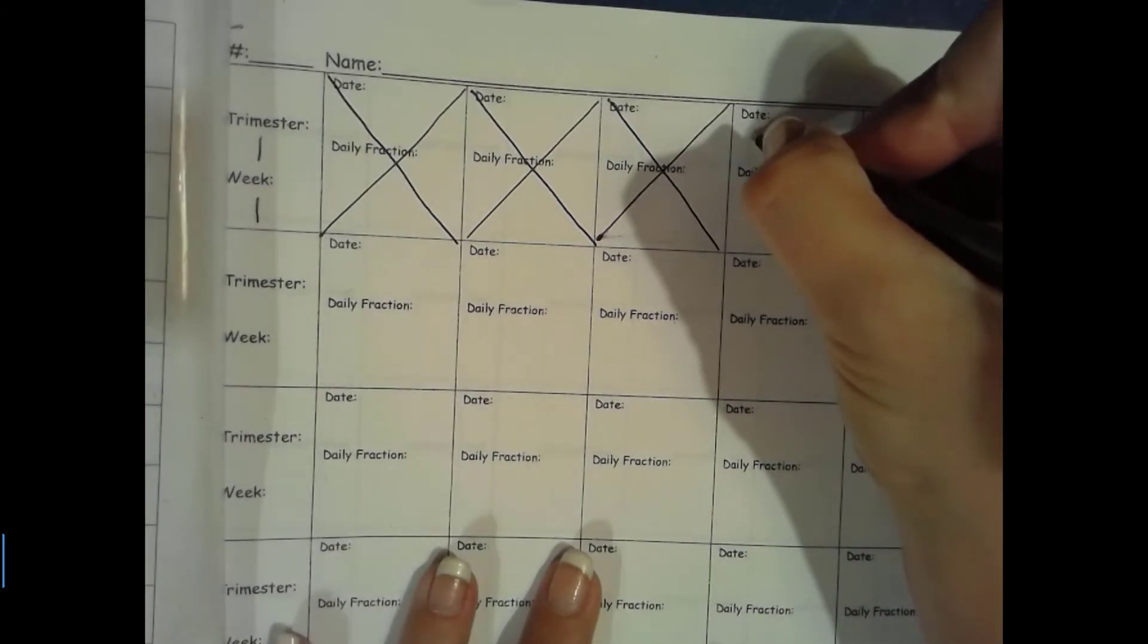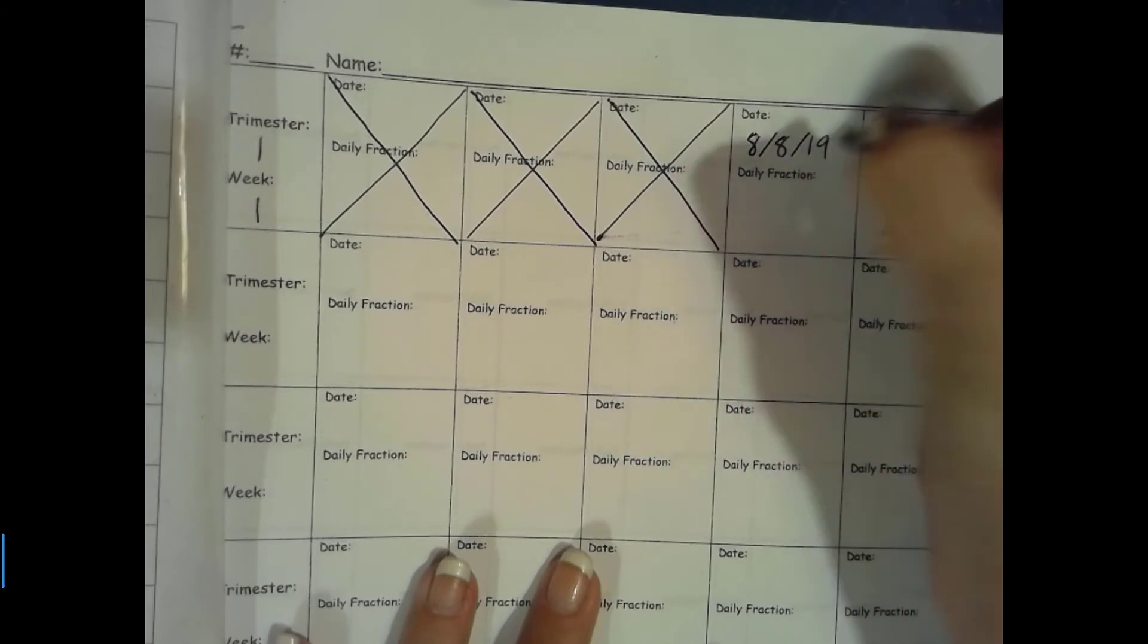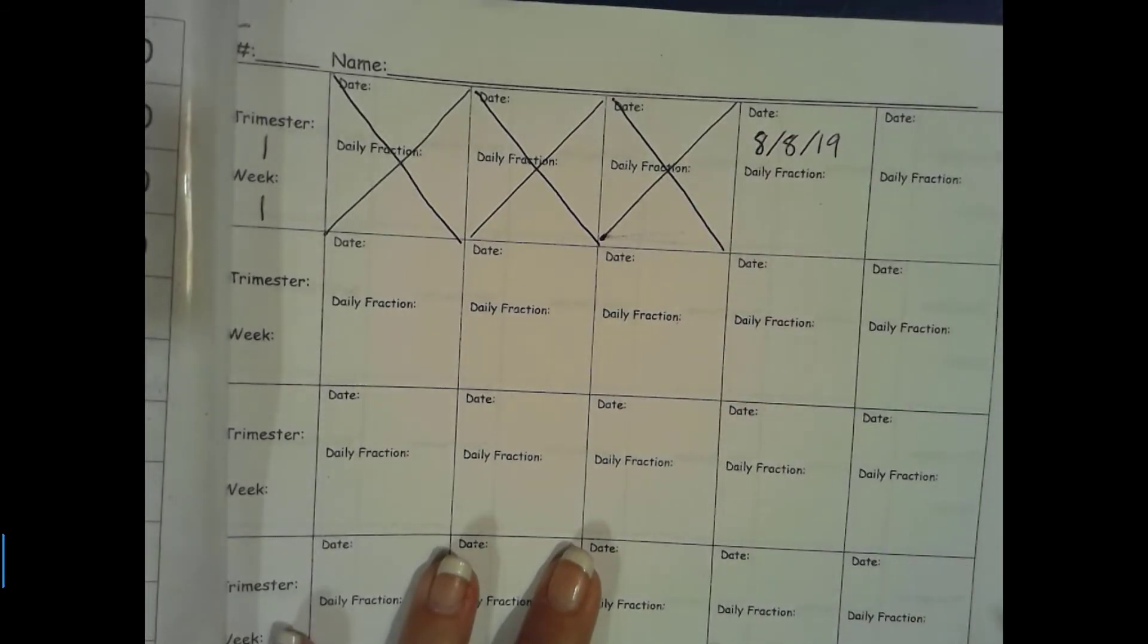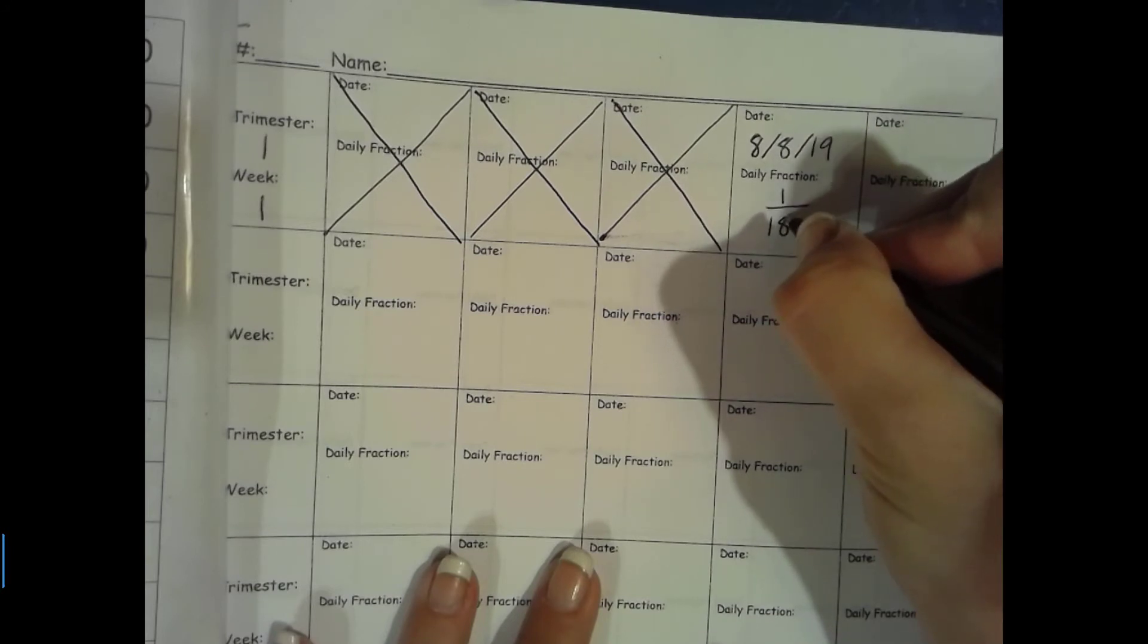So during this whole year we will not be crossing out more than a few days. We will not cross out a whole week. So today we are starting, it is 8/8/19 is our date. And our fraction for today is 1 out of 180.